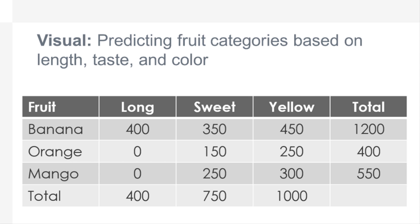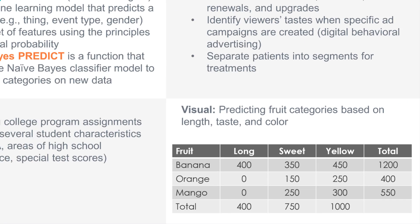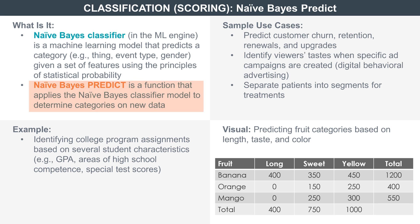It then classifies the data by looking at a vast amount of these features occurring over time and provides a probabilistic classifier for those features. The Naive Bayes PREDICT function simply applies the Naive Bayes model on new data.